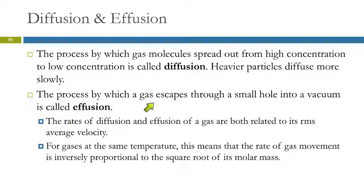Effusion is slightly different - it's a process by which a gas escapes through a small hole into a vacuum. The rates of diffusion and effusion are both related to the velocity of the particles because the faster the particles are moving, the faster they're going to spread out. At the same temperature, the rate of gas movement is inversely proportional to the square root of the molar mass. The root mean square velocity equals the square root of 3RT over the molar mass. The larger the molar mass, the smaller the velocity, the lower the rate of gas movement.